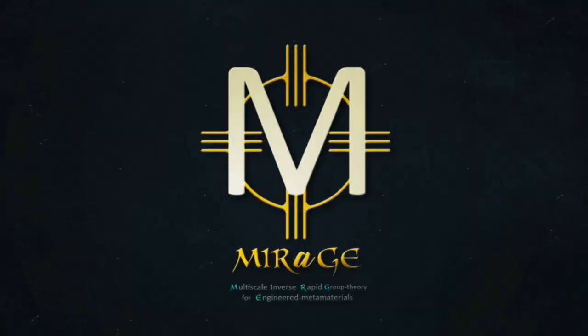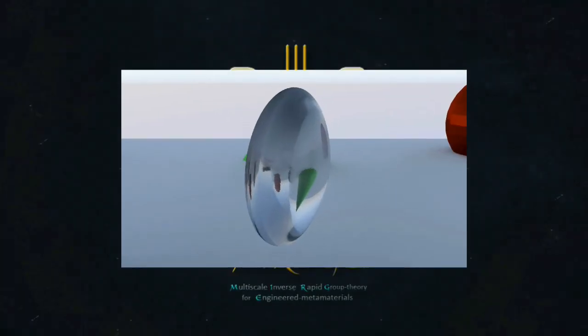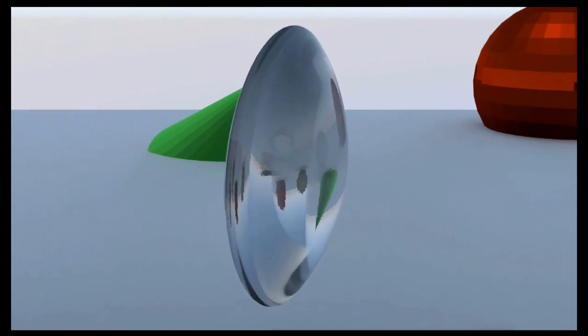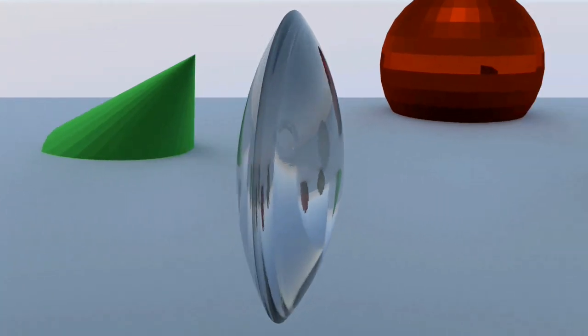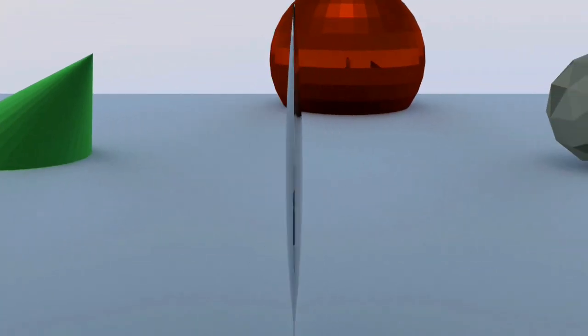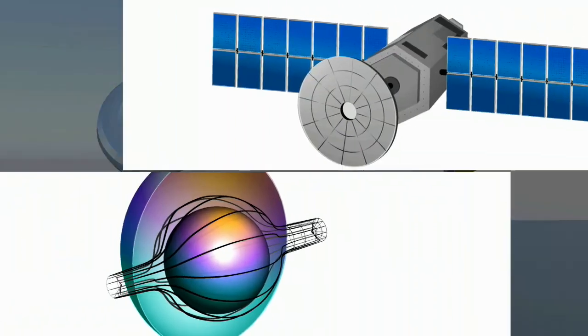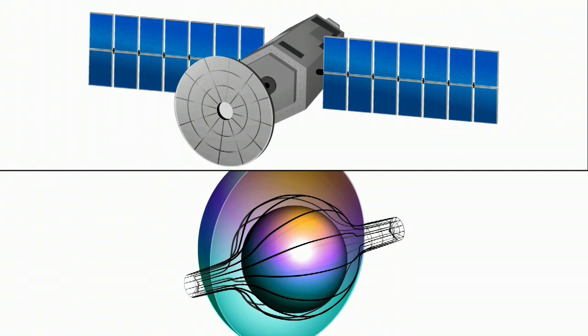Man-made optical metamaterials, known for exhibiting exotic behaviors impossible with natural materials, have often been touted as the technology that will someday enable flat, compact lenses, smaller satellites, and cloaking devices.